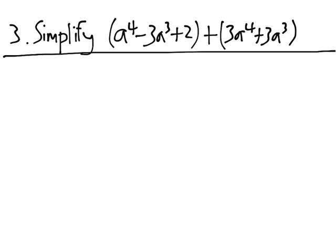Let's do this by aligning like terms vertically so we can add it more easily. If we write the first polynomial, a to the 4th minus 3a cubed plus 2,